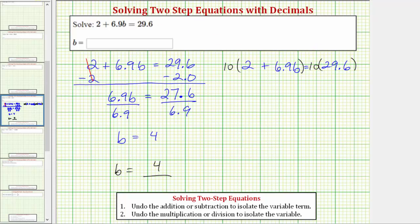10 times 2 is 20. 10 times 6.9b is 69b. And 10 times 29.6 is 296. The solution to this equation will be the same as the original equation. But notice how now we don't have decimals in the equation. But the process for solving this equation is going to be the same.